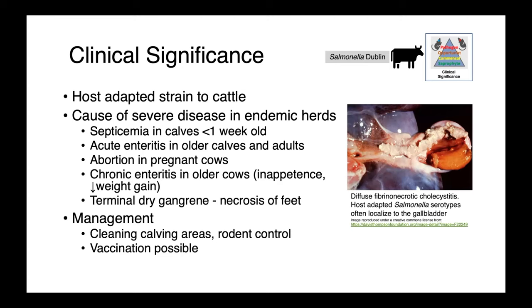Management of these infections involves cleaning up calving areas and rodent control, and vaccinations are also possible. In this image on the right, you can see fibrinonecrotic cholecystitis — inflammation and necrosis of the gallbladder. Salmonella is interesting in that host-adapted serovars often localize to the gallbladder, and so on post-mortem, this can be a really useful site to sample in order to get a diagnosis.